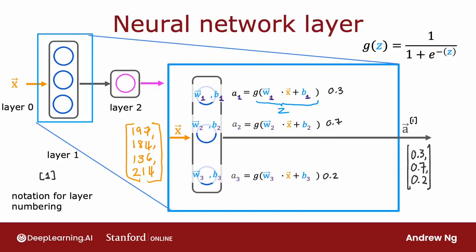Similarly, w1 and b1 are the parameters of the first unit in layer one, so I'll add a superscript in square brackets one here. And w2 and b2 are the parameters of the second hidden unit in layer one, so its parameters are also denoted with superscript square bracket one.